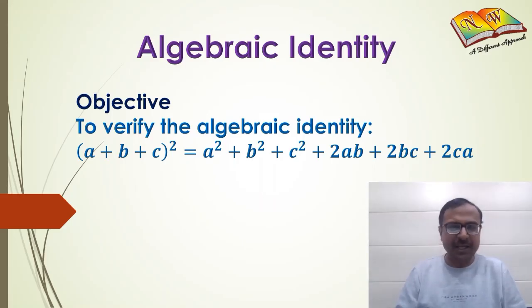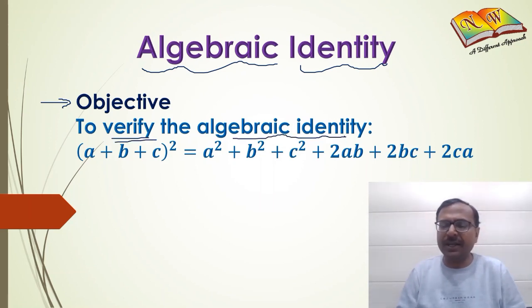This is the activity on an algebraic identity. The objective of this activity is to verify the algebraic identity (a+b+c)² equals a² plus b² plus c² plus 2ab plus 2bc plus 2ca.